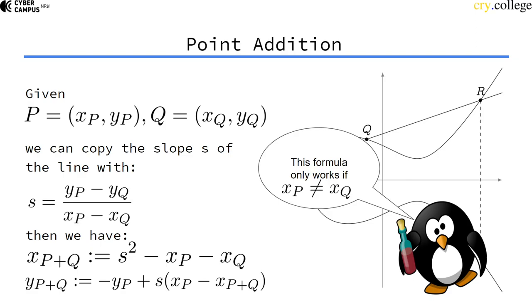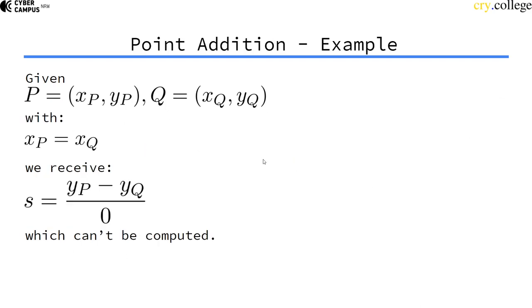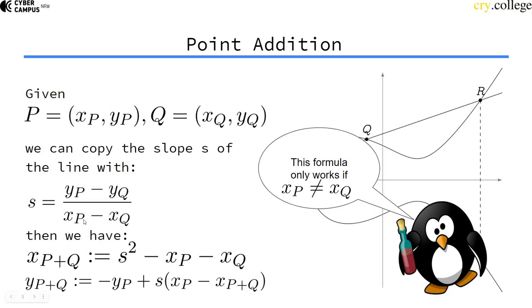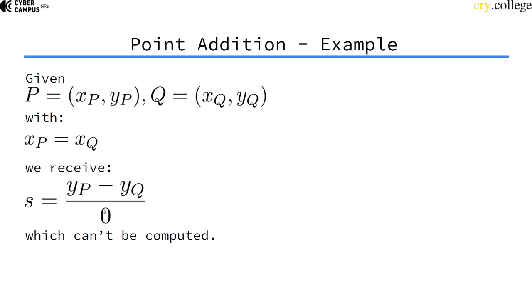Problem is that this formula only works if the x coordinate of p and the x coordinate of q are distinct. Because if they're not, if the x value of both points we want to add are the same, we actually get a zero here. This will be zero and then we would have to divide by zero. And dividing by zero is strictly prohibited, as you probably know. So what do we do?